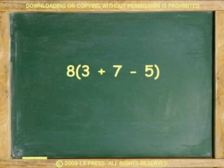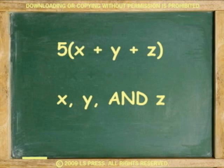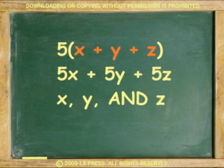Now, although according to order of operation rules, you are supposed to do what is inside the parentheses first, sometimes this is not possible. For example, in here, 5 is being multiplied by the addition of x, y, and z equals 5x plus 5y plus 5z. x, y, and z cannot be added without knowing what x, y, and z represent. Therefore, all you can do here is to distribute 5 over the three terms of the trinomial, x plus y plus z.